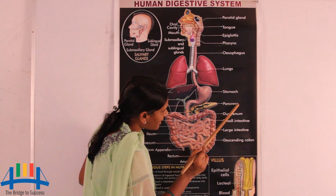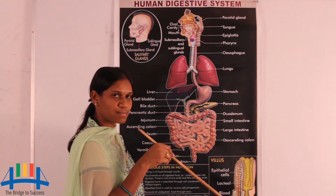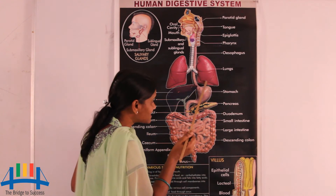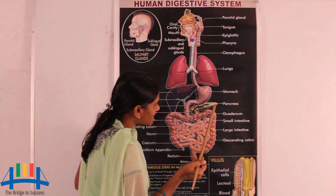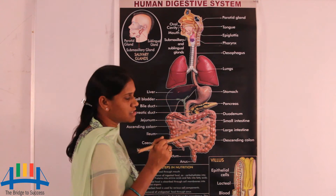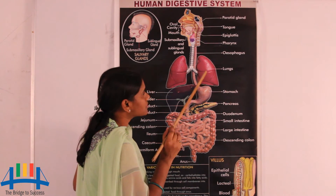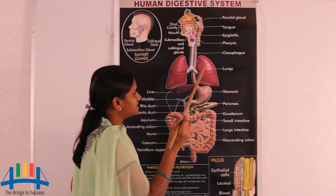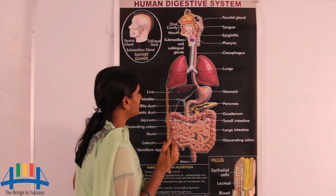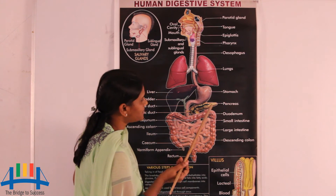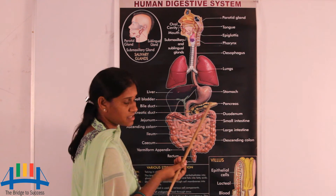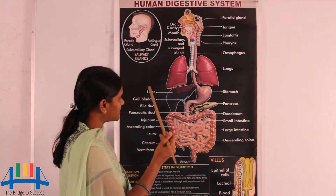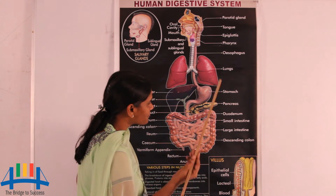The pancreas also helps in digestion — particularly of carbohydrates. The pancreas releases the hormone insulin, which helps in controlling the glucose percentage in the blood. Both the liver and pancreas are on the sides of the stomach and help in the digestion process through their enzymes and hormones.